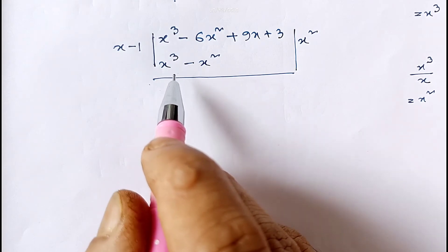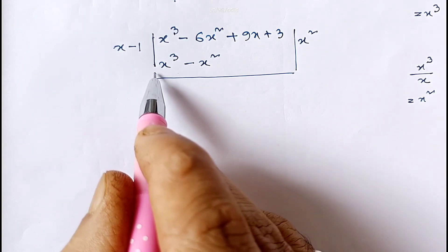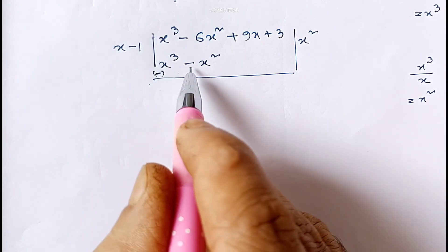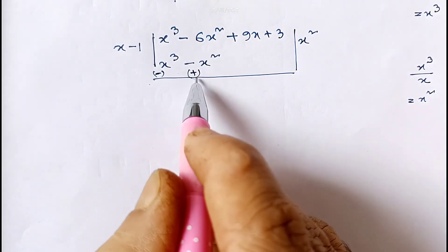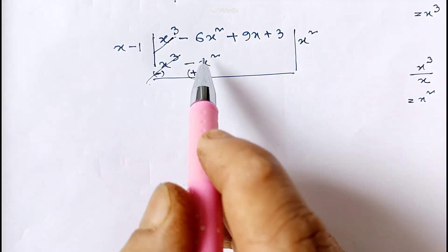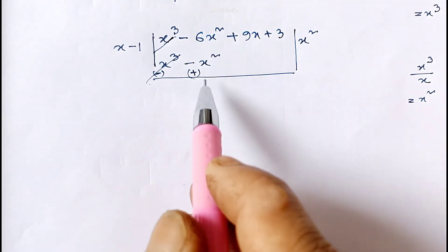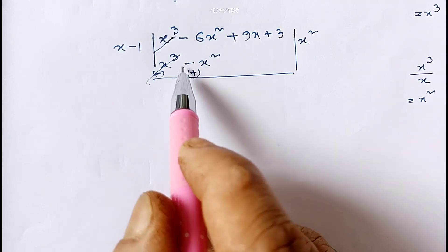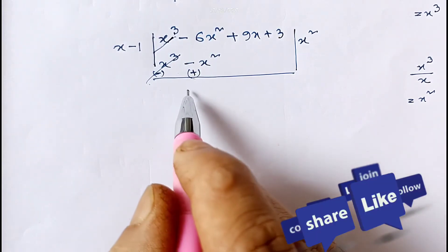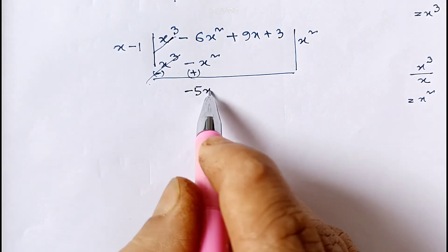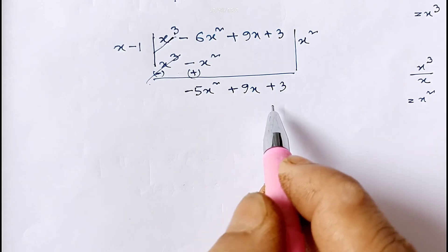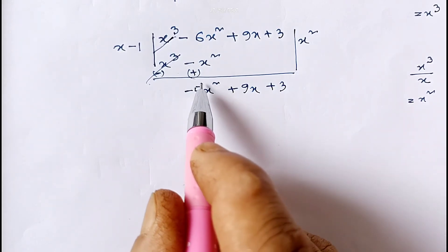Now for subtraction, we change the sign: plus x³ becomes minus x³, and minus x² becomes plus x². This x³ and x³ cancel, so we are left with -6x² + x², which gives -5x² + 9x + 3.